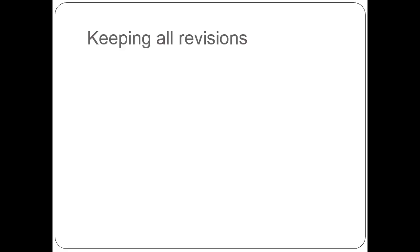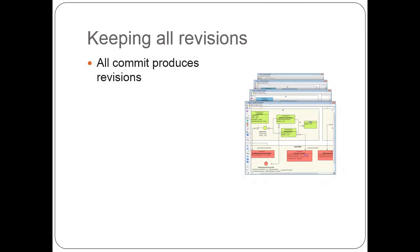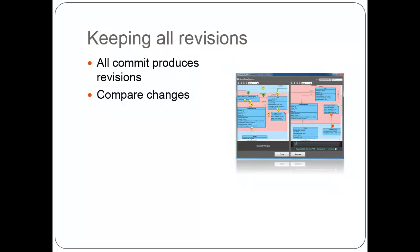Let's move on to another topic: keeping all revisions. In the teamwork server, when you commit a change to the server, it will automatically produce a revision. One revision will contain all the changes you just made, so you can compare changes between different revisions and know the history of specific elements or specific diagrams. Thanks to the visual history function, you can even restore old revisions locally with minimal effort — just a few button clicks. This can save a lot of time if you make a mistake on the server or want to get back part of the model elements.